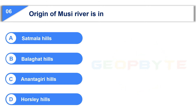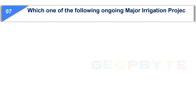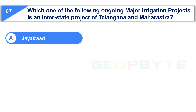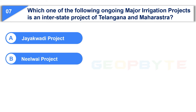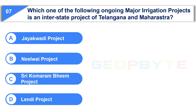Your time is up and the correct answer is Option C: Anantagiri hills. Moving to the next question: Which one of the following ongoing major irrigation projects is an interstate project of Telangana and Maharashtra? Option A: Jayakwadi project, Option B: Nilwai project, Option C: Shrikomaram beam project, Option D: Lendi project. Your time starts now.